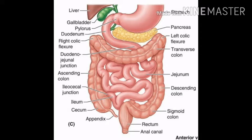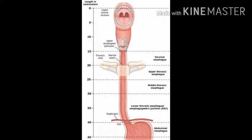These gastric glands are of three kinds. One is mucus cells, which are responsible for secreting mucus. Second is parietal or oxyntic cells, that are responsible for secreting hydrochloric acid. Third is chief or zymogen cells, that secrete the inactive enzyme pro-pepsin.